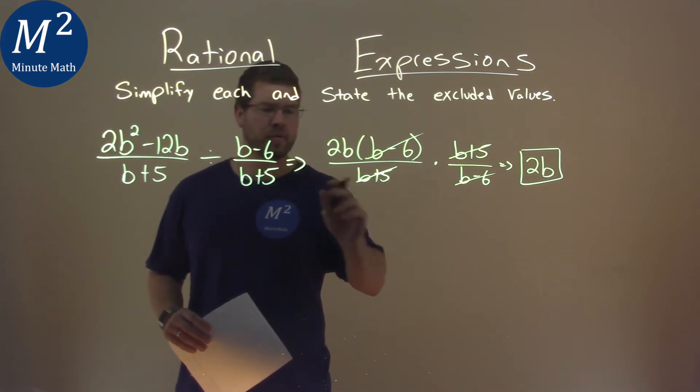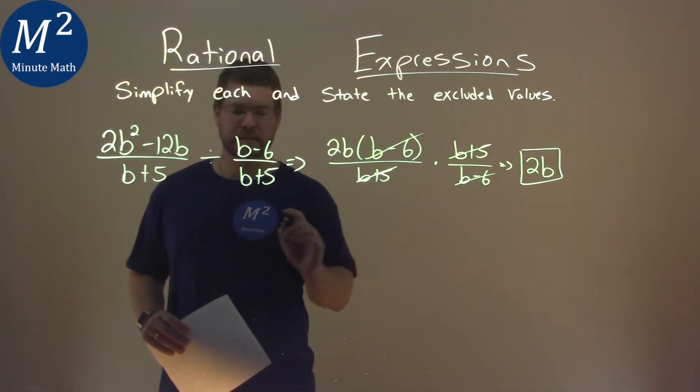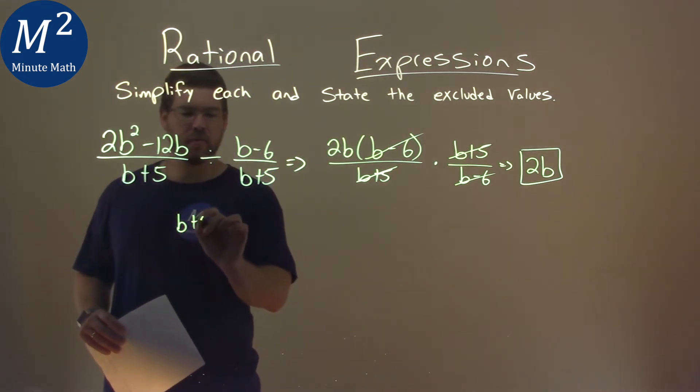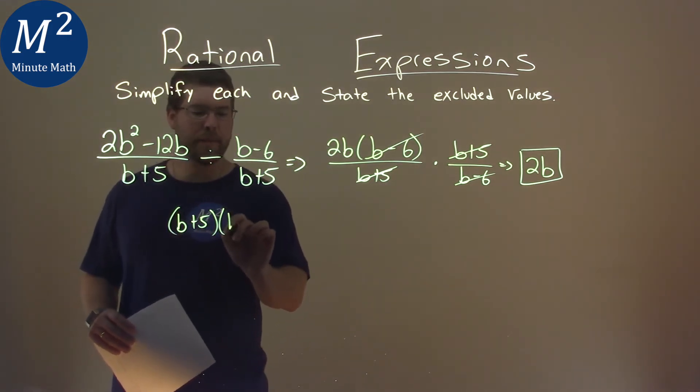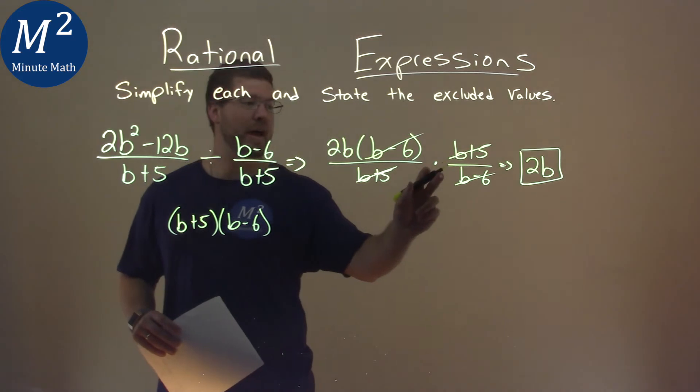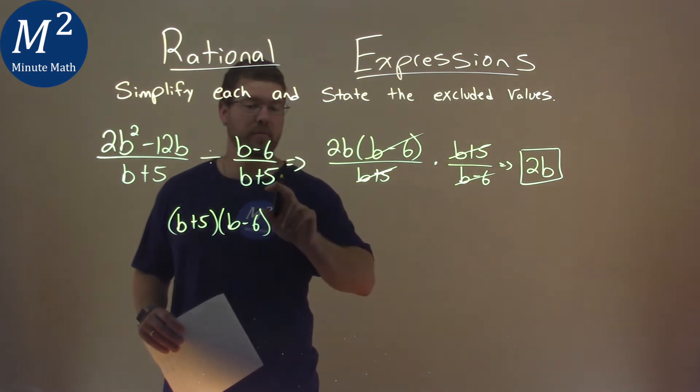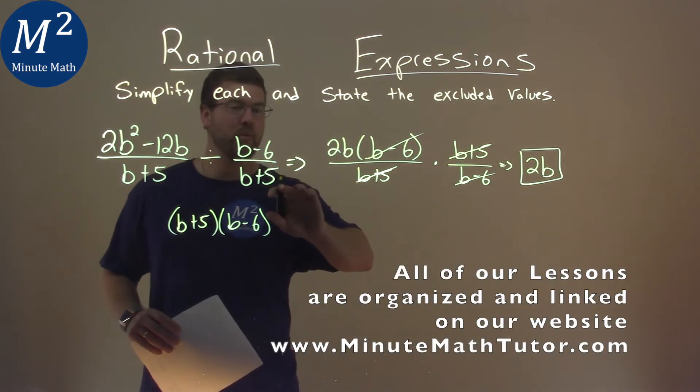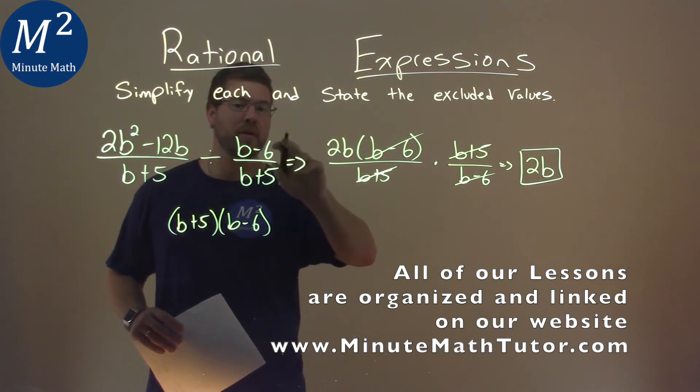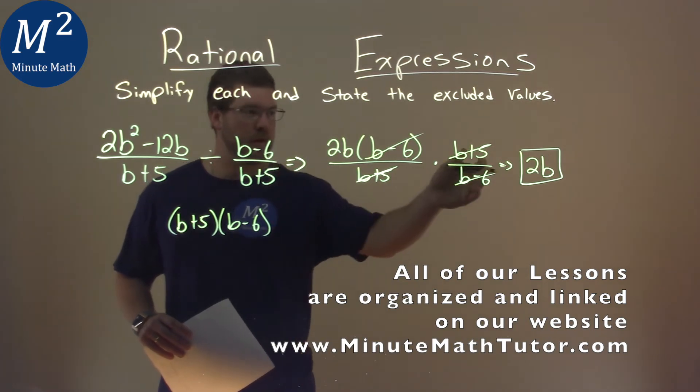And that occurs at our b plus 5 times a b minus 6. So we set that denominator, b plus 5, times a b minus 6, because that's actually when, in the denominator here, b plus 5, when we're dividing, we're not dividing by the b plus 5. Or it's not going to be in the denominator. It flips up, so be careful with that.